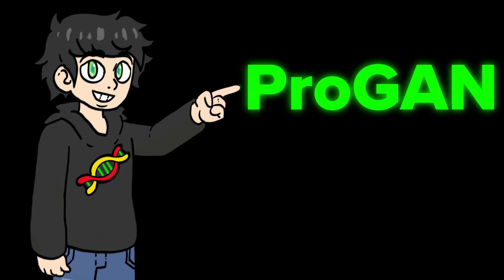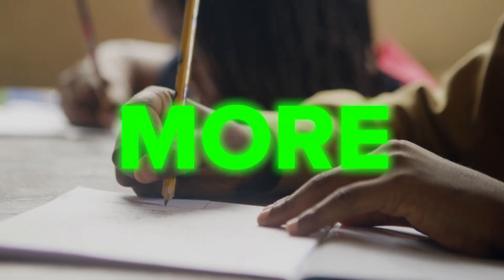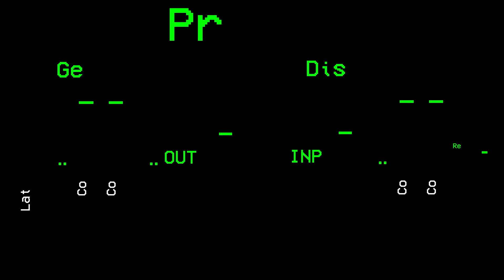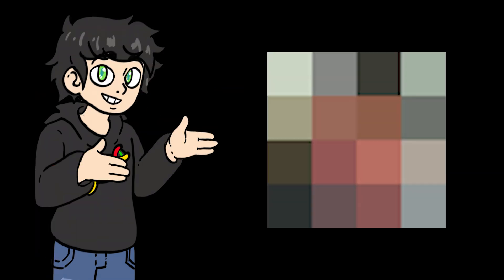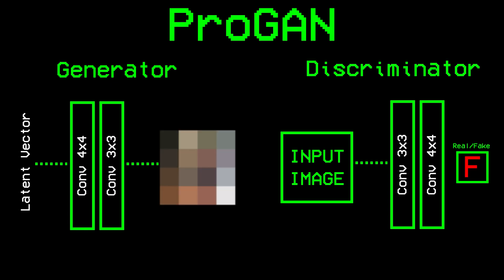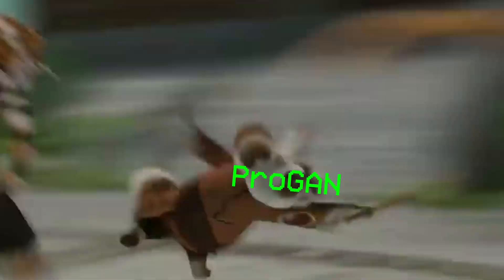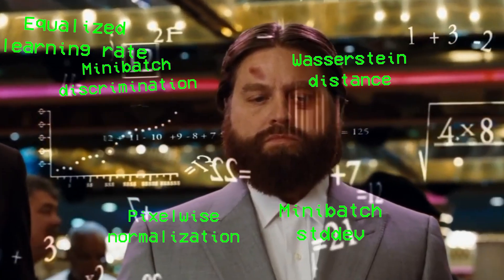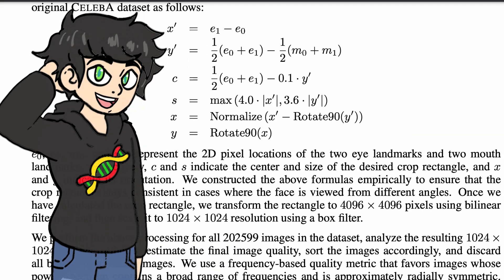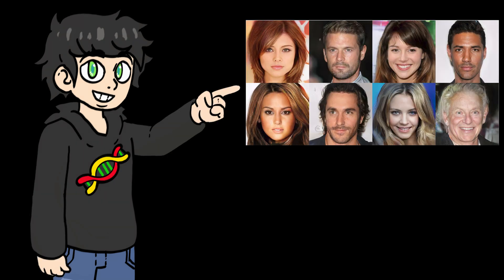ProGAN — progressively growing GANs — is actually more similar to how humans learn because it learns progressively. At first, the models are really small and the generator starts to learn to generate faces at a really low resolution. And when I say low, I mean really low — like a 4x4 pixel resolution. It then trains to master those 4x4 pixel resolutions. When it's good enough, you add more layers to both networks and double the resolution to 8x8, and once it masters that you double again, and so on and so forth until you reach 1024x1024. You also need to add some fancy math stuff, and voilà, you're supposed to get some pretty nice images.